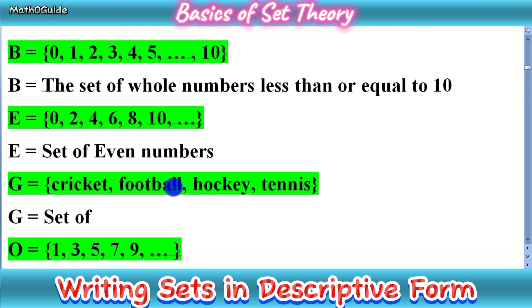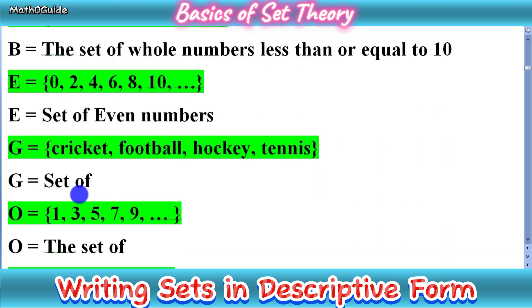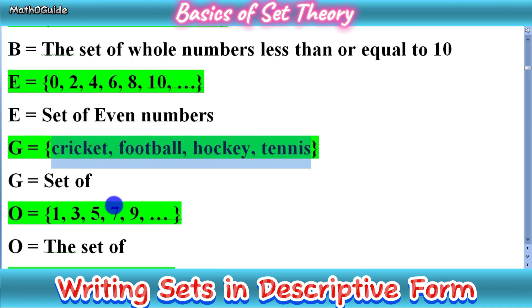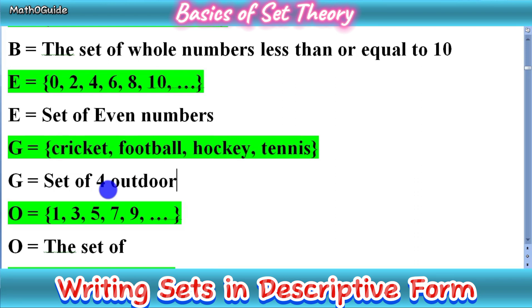Next, set G = {cricket, football, hockey, tennis}. These are games — specifically outdoor games. So we write: set of four outdoor games.